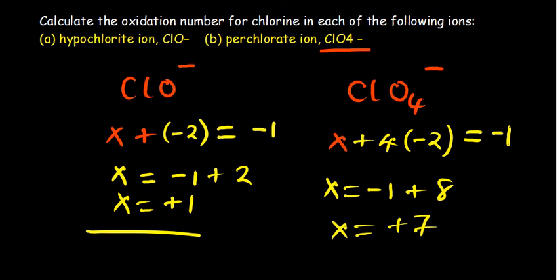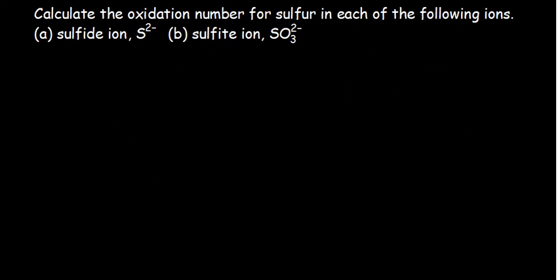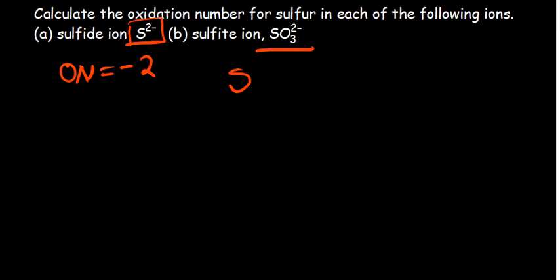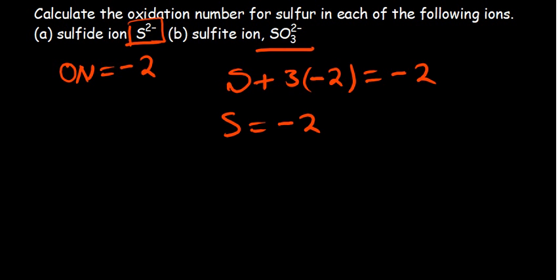For question three on sulfur: first, sulfur written as an ion S²⁻ — the oxidation number is equal to its charge, which is minus two. For the second compound SO₃²⁻, we have three oxygen atoms each with oxidation state minus two, and a net charge of minus two. So X plus three times negative two equals minus two, giving X plus negative six equals minus two, so X equals plus four. Sulfur has an oxidation number of positive four.